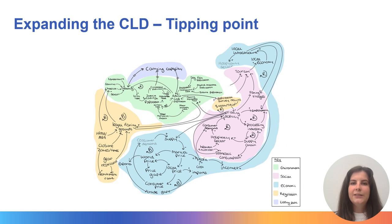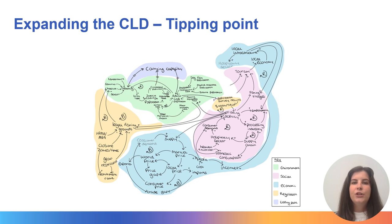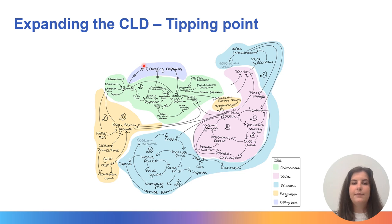In this final stage of our system we've introduced tipping points. In this case our tipping point is carrying capacity. This is the result of the reinforcing feedback which may occur when fishing activity gets so high that the population of codfish decreases massively, hitting a threshold which then changes the carrying capacity. The lines indicating the tipping point reflect that this often occurs after a time delay.